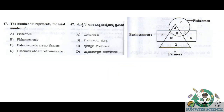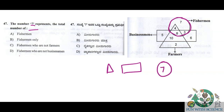Question number 47: the number 7 is in the fisherman circle. It is not intersecting with the rectangle or triangle — it is purely within the fisherman circle only. So number 7 represents purely the number of fishermen who are not in any other group.